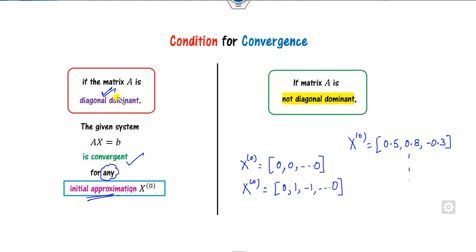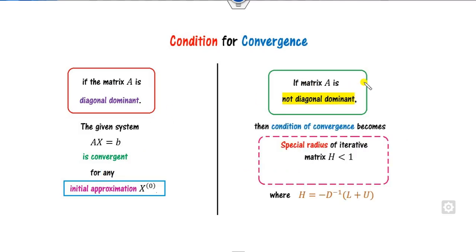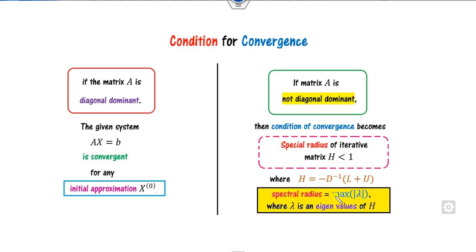If A is not diagonally dominant, we compute the spectral radius of the iterative matrix H, denoted ρ(H). The spectral radius is the maximum of the absolute eigenvalues of H. If ρ(H) < 1, the Jacobi method is convergent; otherwise it is not.